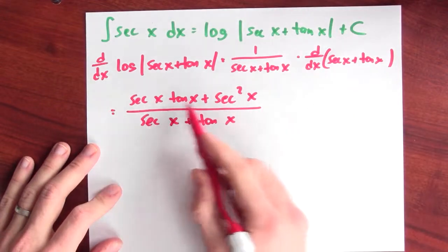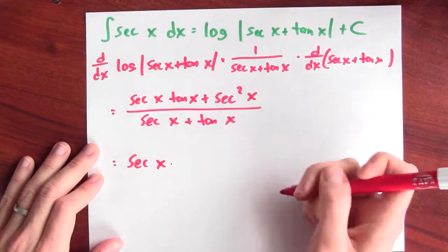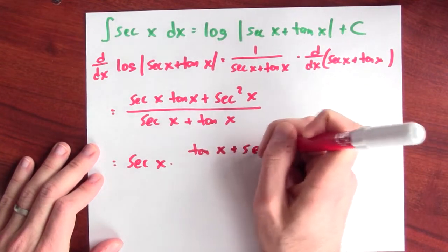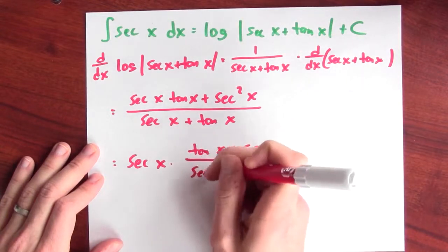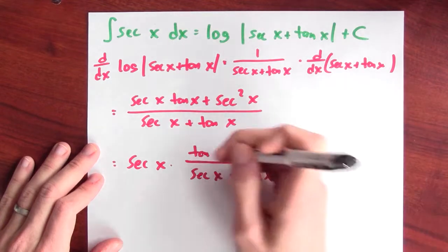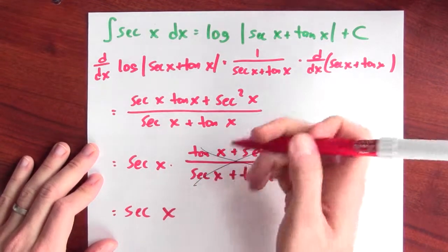Note, I can factor out a secant x here. I've got secant x times tangent x plus secant x in the numerator, and the denominator is secant x plus tangent x. The denominator is the same thing. I wrote it in the opposite order. But now this is great, this cancels and what I'm left with is secant x.